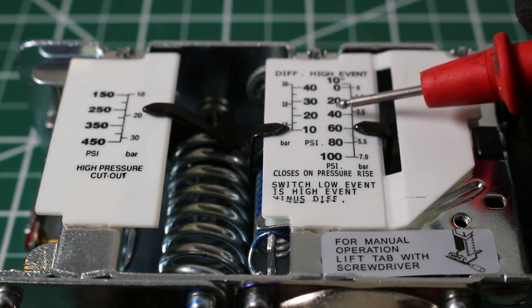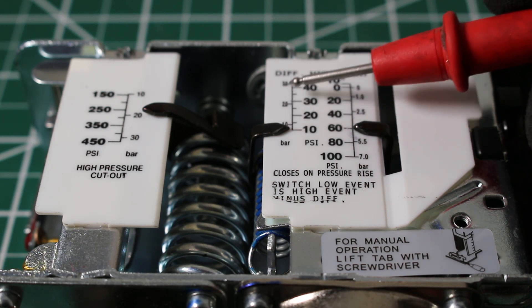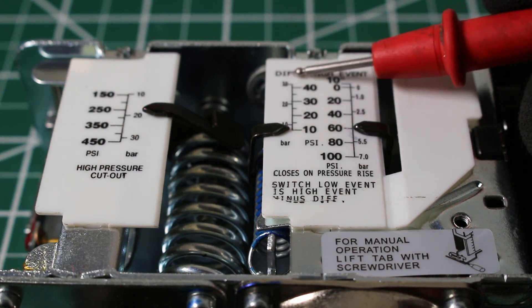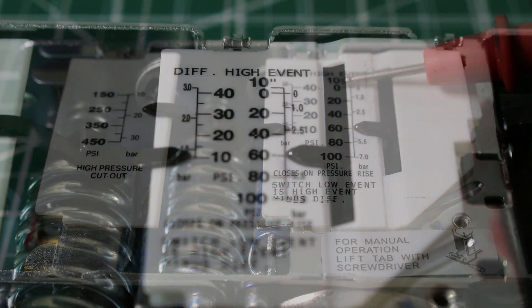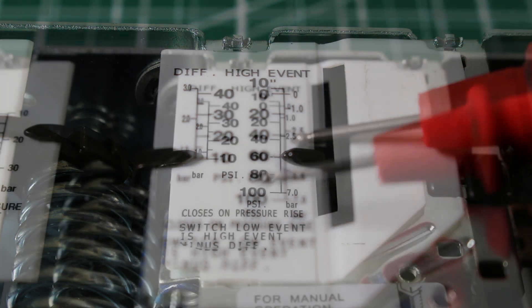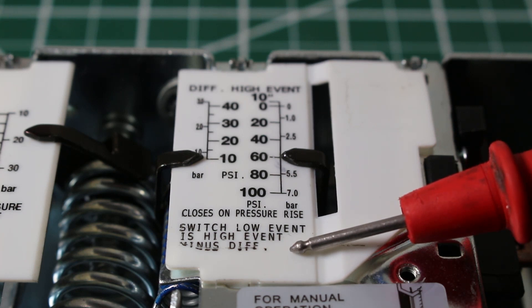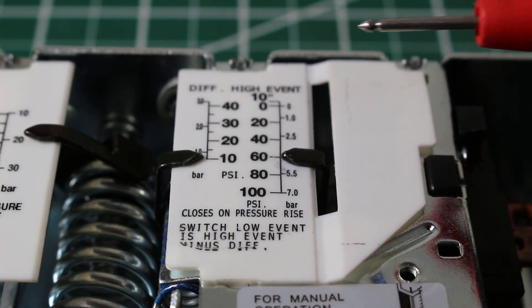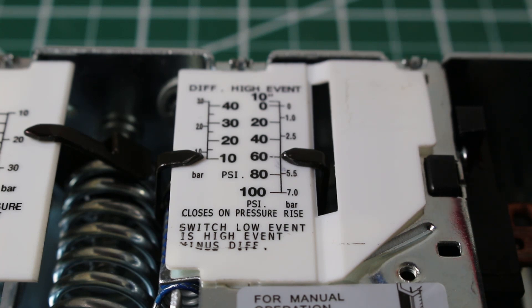The reason I said 50 is because this control right now is set to shut off at 50 psi and I will explain that. If we look at this tab, this is our differential. If we look at this tab, this is our high event. Let's get a clear image of that. Differential, high event. Here it states switch low event is high event minus differential. Sounds confusing, but it's really not. When you first learn about something, of course it can be difficult, but with a little bit of patience and time, you can achieve anything. So let's go over this.